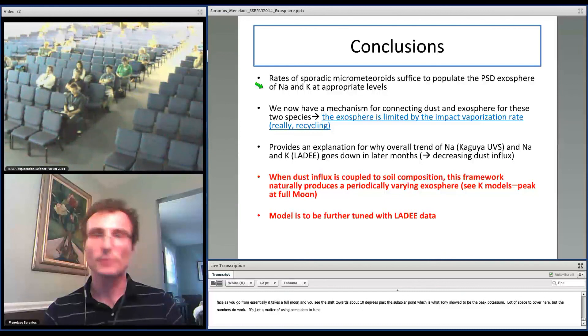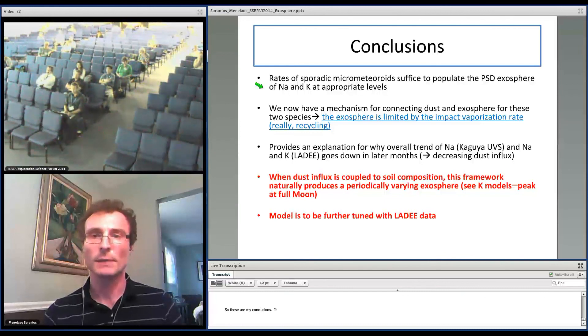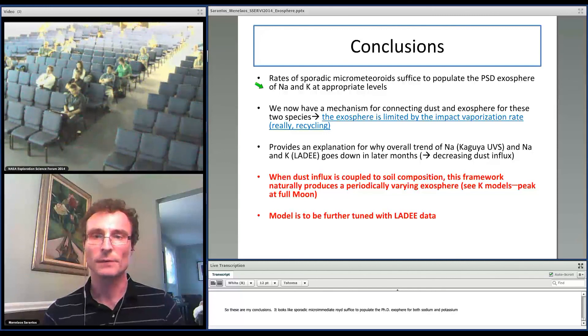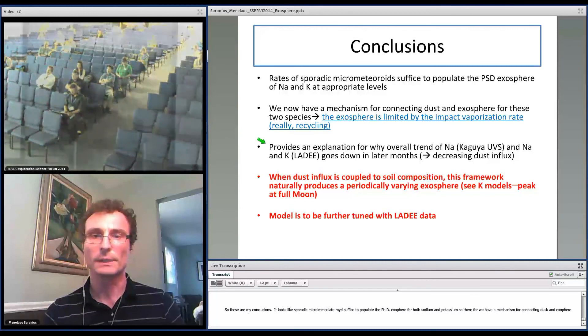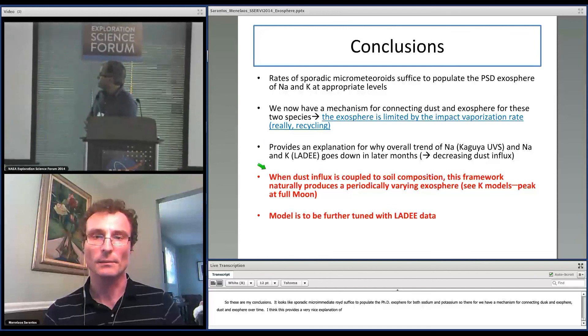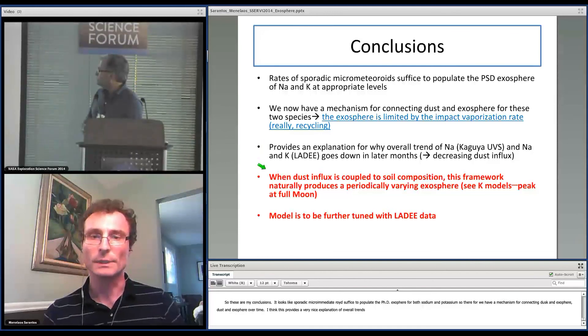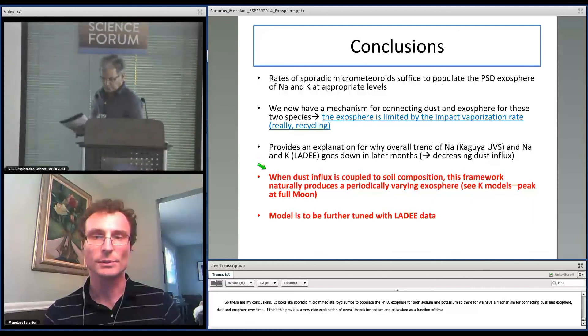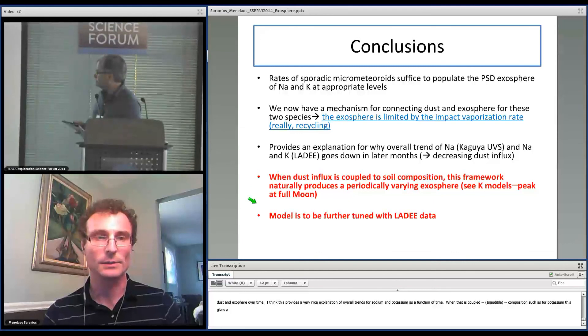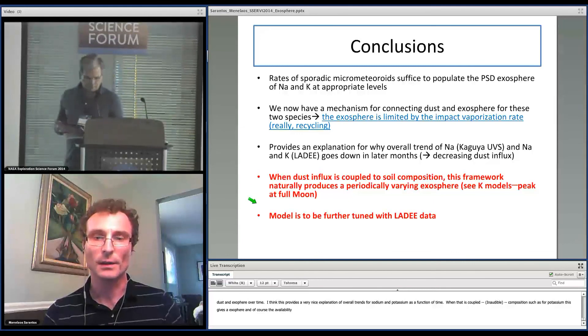So these are my conclusions. It looks like rates of sporadic micrometeoroids suffice to populate the PSD exosphere for both sodium and potassium. And therefore, we now have a mechanism for connecting dust and exosphere over time. I think this provides a very nice explanation of overall trends for sodium and potassium as a function of time. And when dust influx is now coupled to soil composition, such as for potassium, this gives a periodically varying exosphere. And of course, the availability of LADEE data allows us to really fine-tune these parameters now. That concludes it. Thank you.